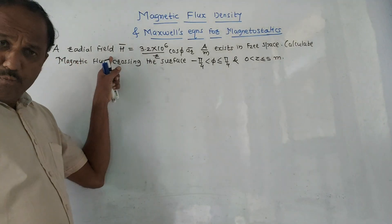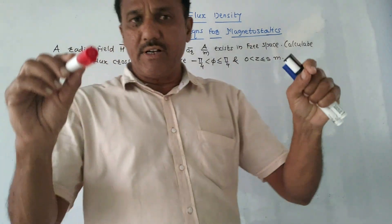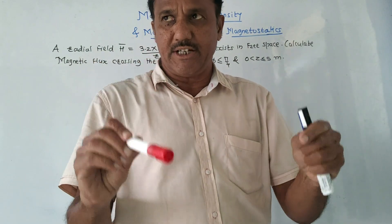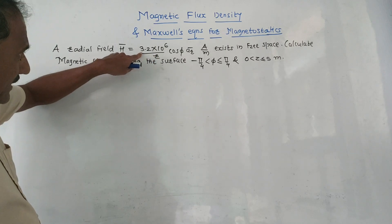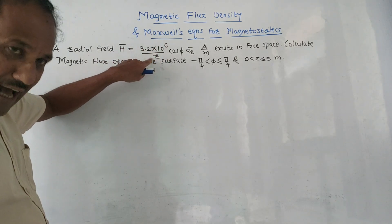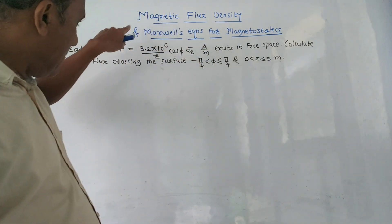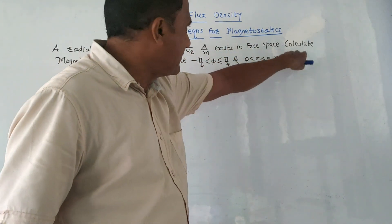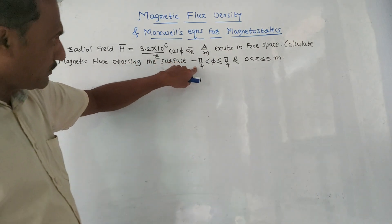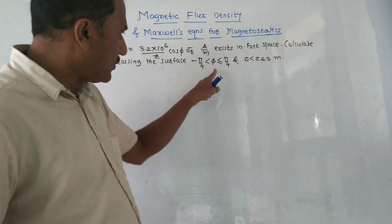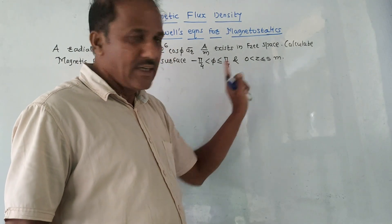The given numerical: a radial field H-bar. Radial field means along the radius, so direction is a-r bar. H-bar equals 3.2 × 10⁶ divided by r, times cos φ, in the a-r direction, in amperes per meter. Existing in free space, calculate the magnetic flux crossing the surface where φ varies from −π/4 to +π/4, and z varies from 0 to 5.